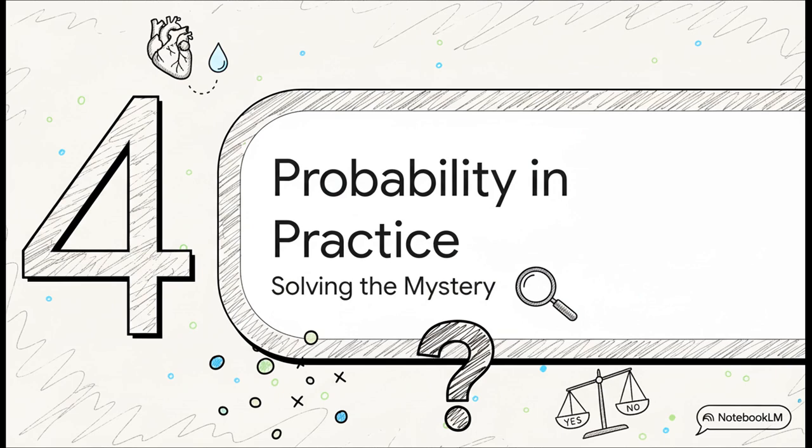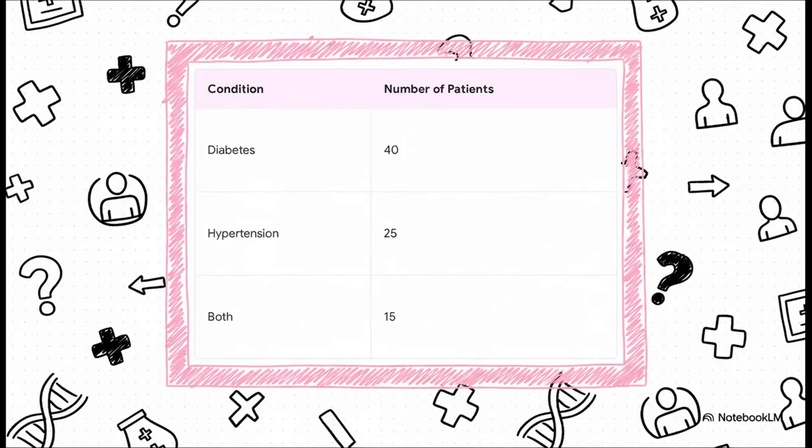Okay, so theory time is over. We've got the concepts down. We know the difference between a connection and a coincidence. So let's go back to that clinic in Ghana and use some real data to finally solve this mystery about diabetes and hypertension. All right, check this out. Here's our data from 100 patients.